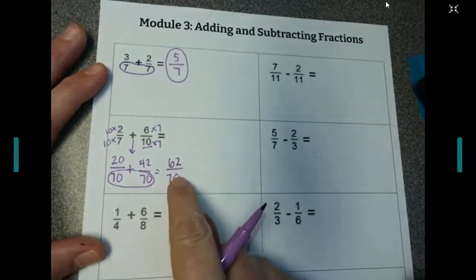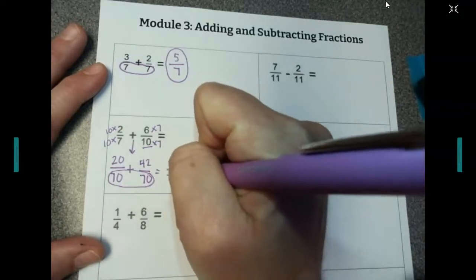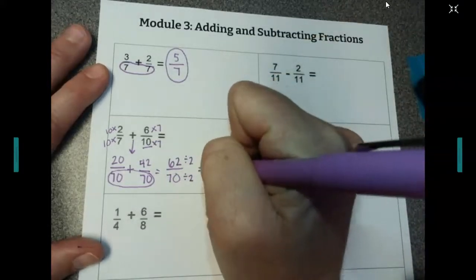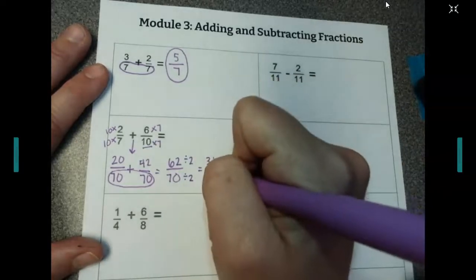Now, if we look at this, I see that they're both even, so I know I can divide the top and bottom by 2. 62 divided by 2 is 31. 70 divided by 2 is 35. So that's our answer.